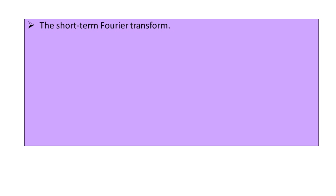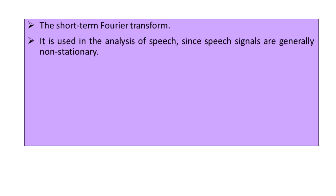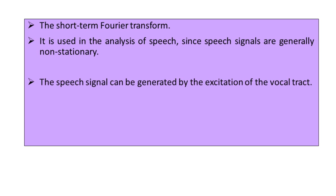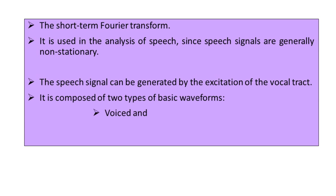The Short-Time Fourier Transform, also known as the Windowed Fourier Transform, was already covered in the previous chapter — Chapter 7, Topic 15. It is used in the analysis of speech signals since speech signals are generally of a non-stationary type. Speech signals are generated by the excitation of the vocal tract and are composed of two types of basic waveforms: voiced waveforms and unvoiced waveforms.